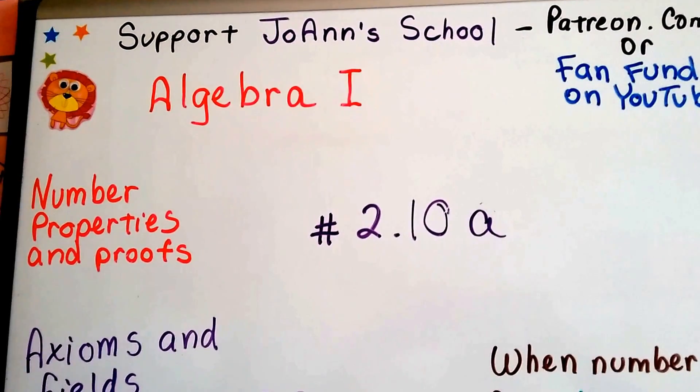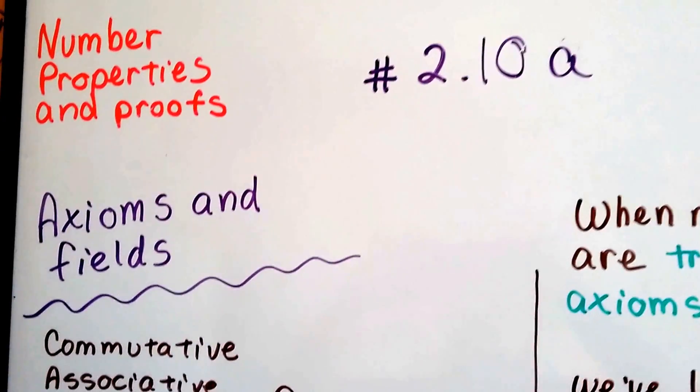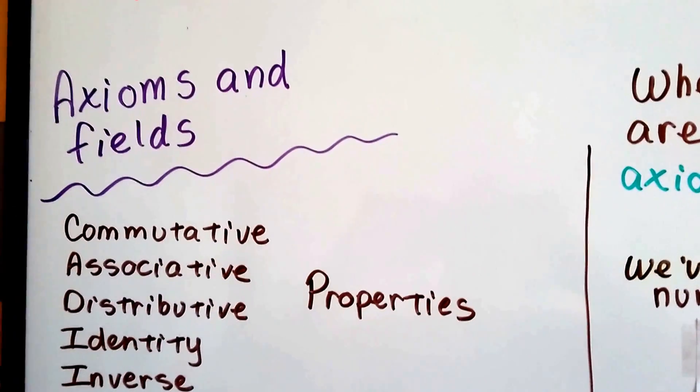Algebra 1 number 2.10a. We're going to talk about number properties and proofs in this unit. This is about axioms and fields.